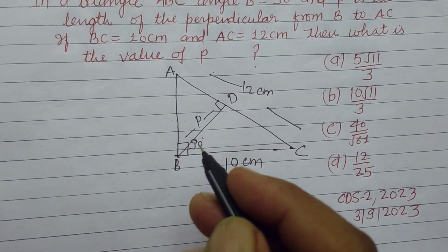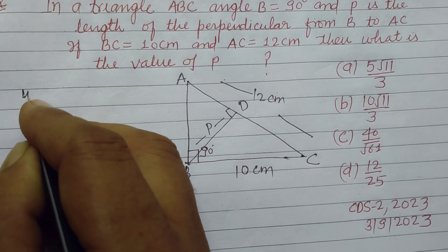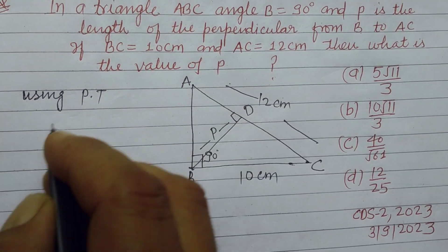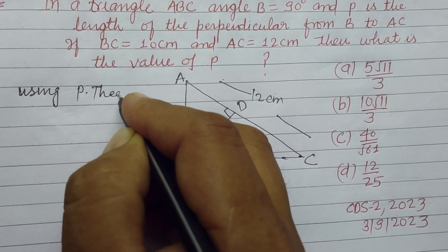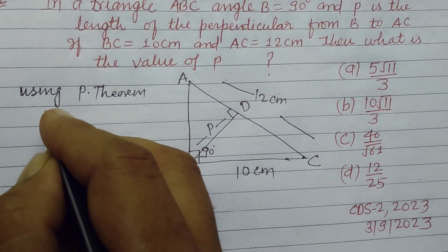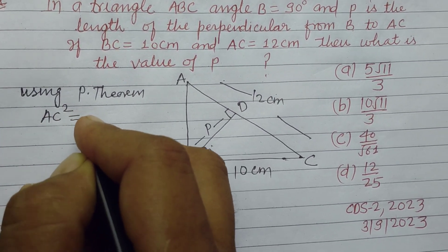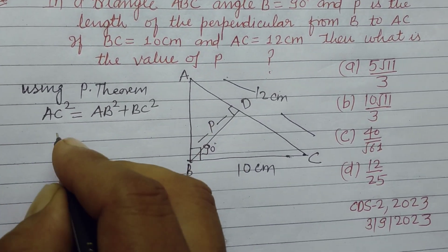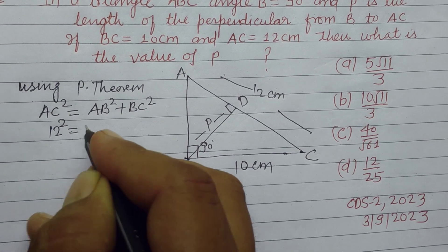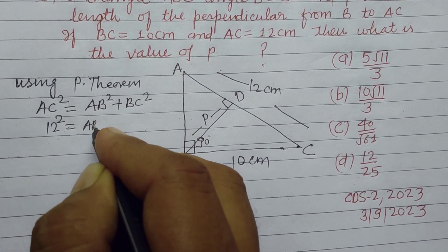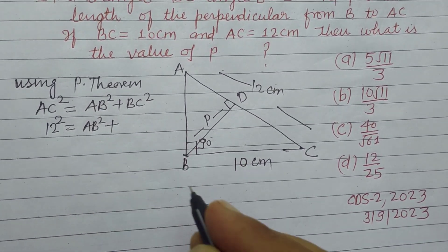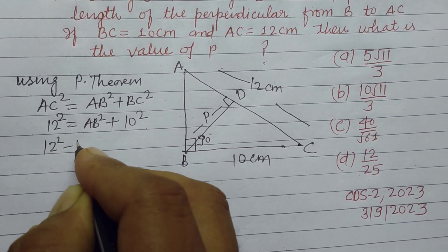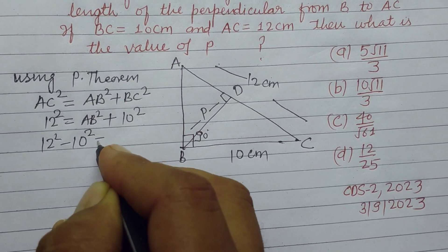So student, using Pythagoras theorem, we write AC² equals AB² plus BC². AC is 12 squared equals AB² plus BC is 10 squared. So 12 squared minus 10 squared equals AB².